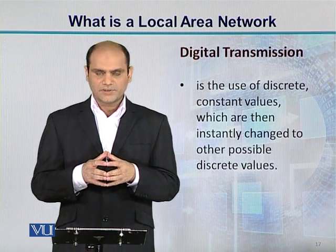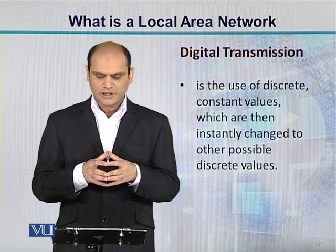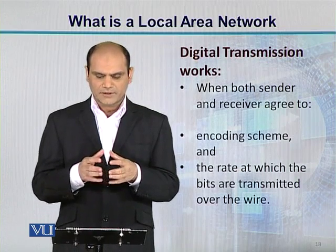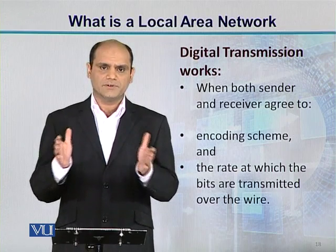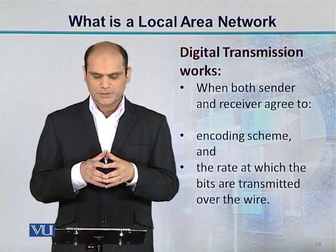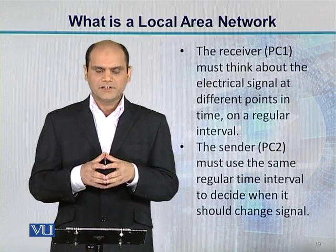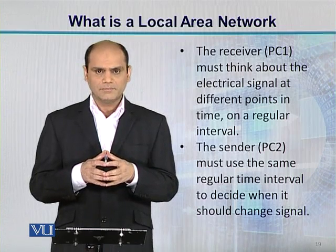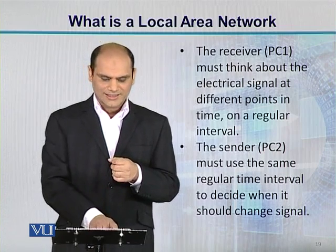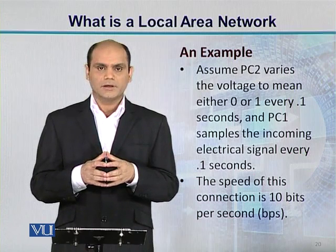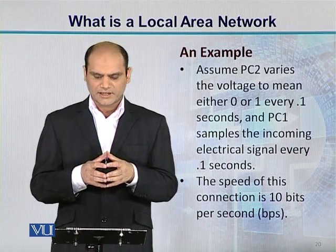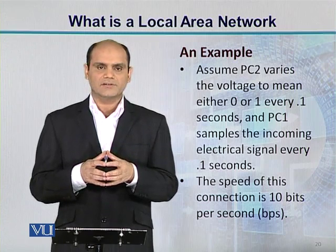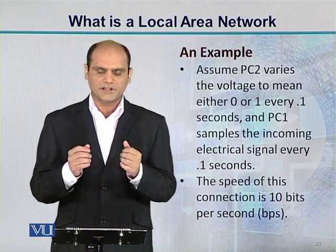Digital transmission is the use of discrete constant values which are instantaneously changed to other possible discrete values. It works when both sender and receiver agree on the encoding scheme and also the rate at which bits will be transmitted. The receiver, PC1, must sample the electrical signal at regular intervals, and PC2 must use the same interval to decide when to change the signal. For example, if PC2 varies the voltage every 0.1 seconds and PC1 samples every 0.1 seconds, then 10 bits will be transferred per second.